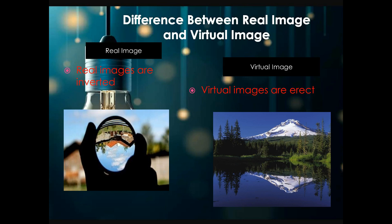So let's compare real images and virtual images. Can you see in the picture real images are inverted — that means they are upside down. So whenever you see an upside down image it has to be a real image. Now look at the other picture — virtual image. Can you see it's always erect? This is the reflection of the mountain top on the water body, and it is erect.